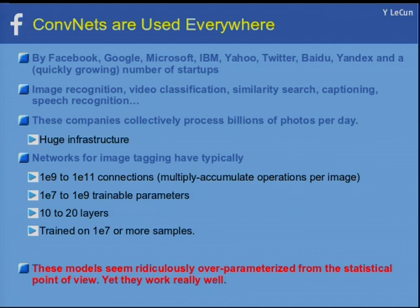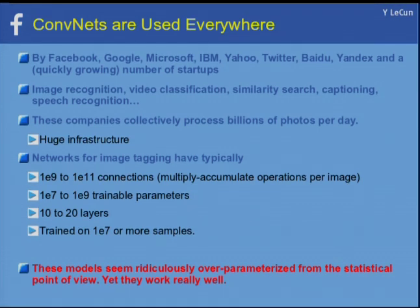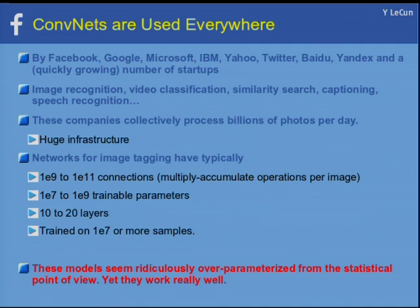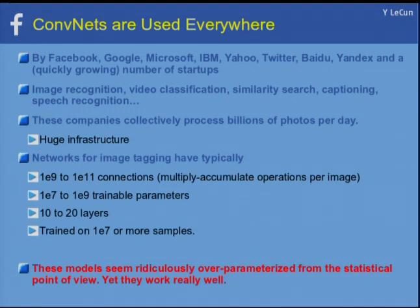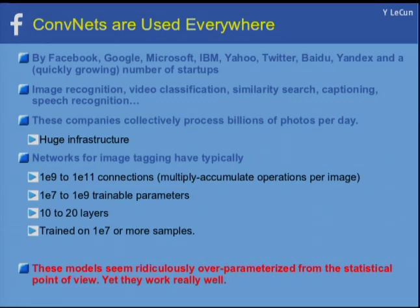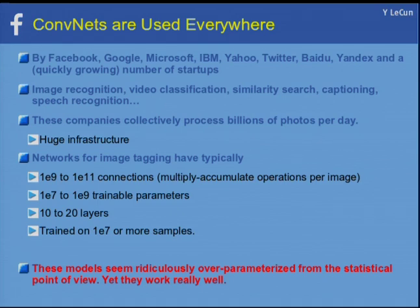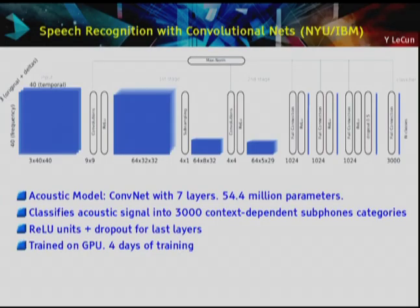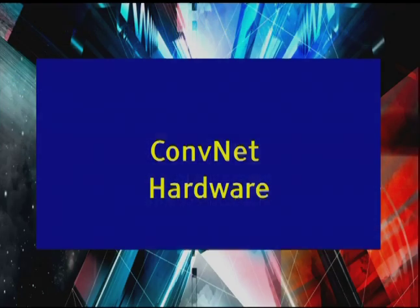Convolutional nets are now used everywhere: Facebook, Google, Microsoft, IBM, Yahoo, Twitter, Baidu, Yandex, and many startups for applications including medical image recognition. The infrastructure required to run these in production is gigantic, and the power consumed is considerable. These networks are big and getting bigger, with no end in sight — so we need hardware.